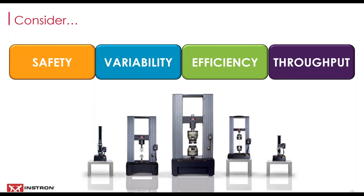Improvements in a lab will affect each of these four categories: safety, variability, efficiency, and throughput. These are the main ways semi-automated and fully automated tools are able to improve performance in a lab. We'll be looking at each one to get a better idea of how Instron solutions fit in these categories.